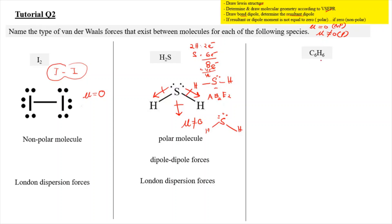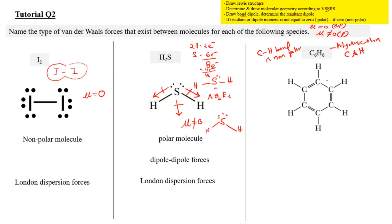For C₆H₆ (benzene), the key clue is that it is a hydrocarbon — a molecule consisting of carbon and hydrogen only. The C–H bond is non-polar, and hydrocarbons are always non-polar molecules. So benzene is essentially non-polar and can only have London dispersion forces.